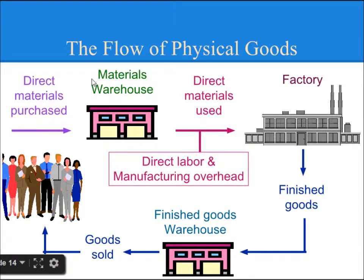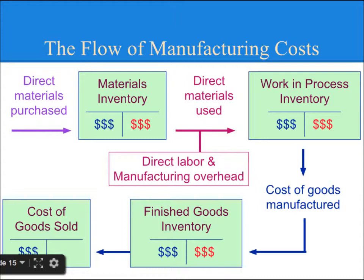The Flow of Physical Goods: Direct Material is purchased, then it goes to the Material Warehouse, then Direct Material is used in the factory to make goods, and when the goods are done they are called Finished Goods. Finished Goods go to the Finished Goods Warehouse and then are sold to the end customer. For the journal entries: Direct Materials purchased are recorded in Material Inventory; when used, Work In Process Inventory is updated; when goods are completed, the entry is made in Finished Goods Inventory; and once sold, the Cost of Goods Sold journal entry is updated.